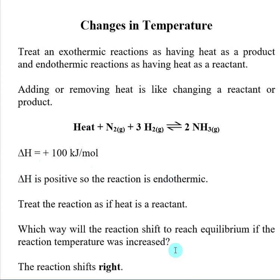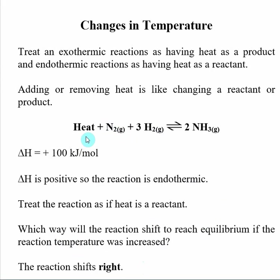Which way will the reaction shift if the reaction temperature is increased? Le Chatelier's principle says the reaction will shift in the direction that reduces the stress. In this case, the stress is increasing temperature, so the reaction is going to shift in the direction that uses up heat, and that's to the right. As we go to the right, we use up nitrogen and hydrogen, absorb heat, and make ammonia.